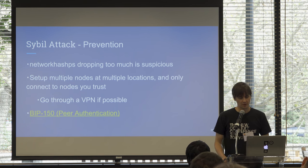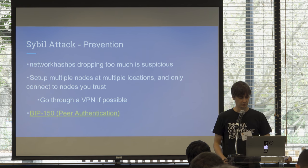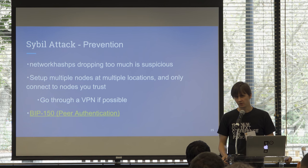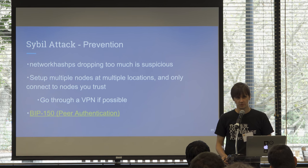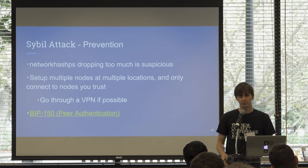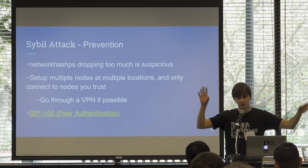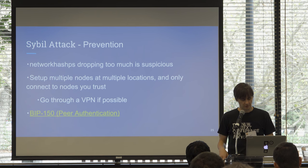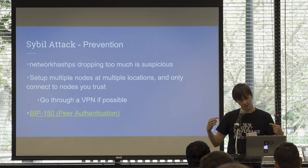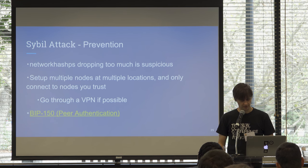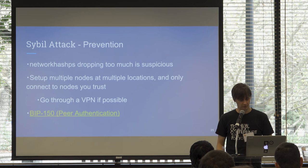To prevent or detect a Sybil attack: you can check if the network hash rate drops substantially, which would indicate you're no longer on the main network. A more practical approach is having multiple nodes in various locations connected to each other through a VPN, especially if you're an exchange. There's also BIP150 peer authentication — I'm not sure if it's been implemented yet, but worth checking if you're interested in the subject.